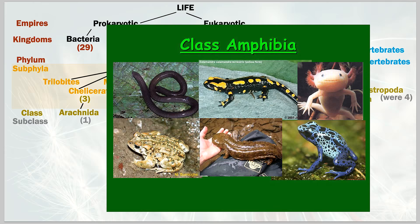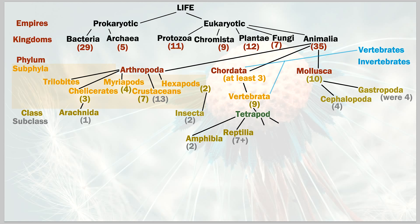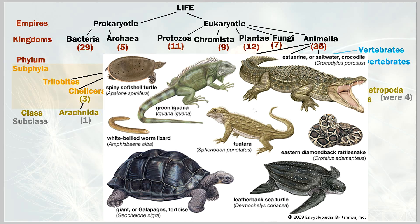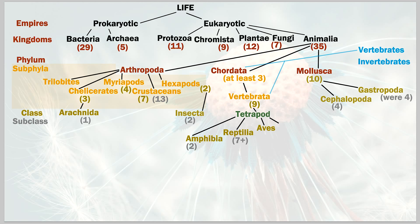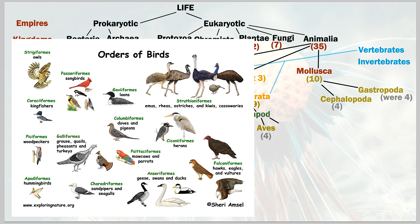Next is reptilia — reptiles — with more than seven subclasses or subcategories. Examples include crocodilians, snakes, turtles, tortoises, and lizards. Then we have aves — birds — with four subclasses: all feathered creatures, including penguins, which some people don't realize do have feathers.